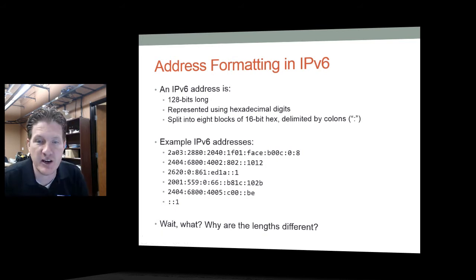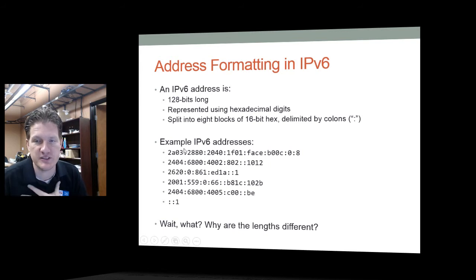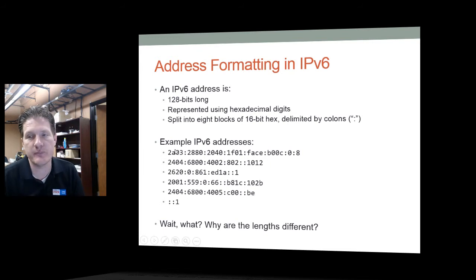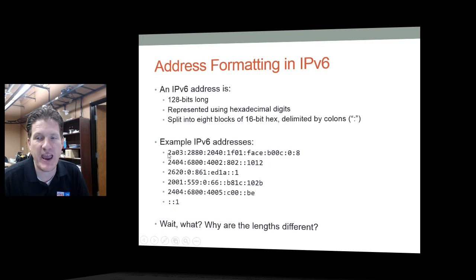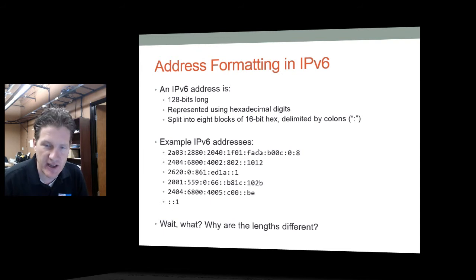As you can see, take the block '2A03' — each one of those characters represents 4 bits, for a total of 16 bits per block. We separate each of these 16-bit blocks by a colon, giving us eight 16-bit hex blocks in the IPv6 address. You may notice that example IPv6 addresses look different and have different lengths — that's because we use shortcut notation.